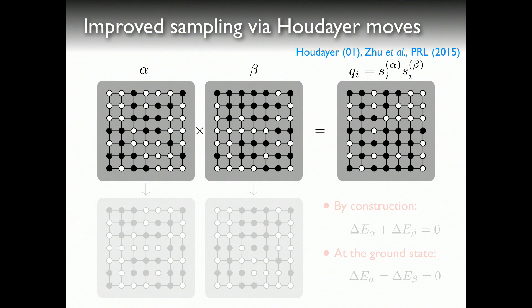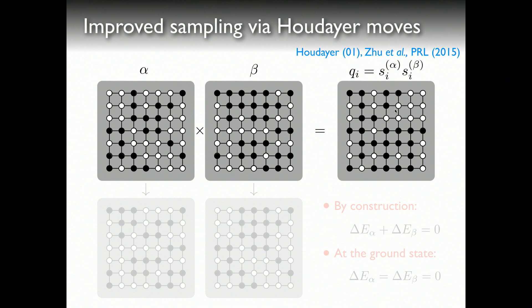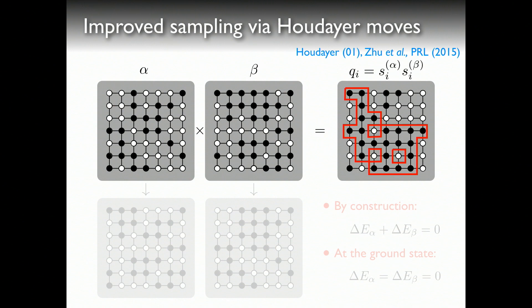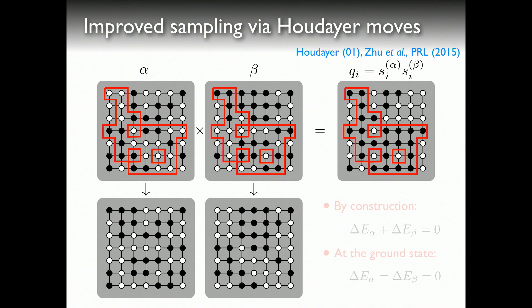Let me walk you through how this works. You start with two configurations alpha and beta — these can be two ground states or two simulation snapshots. In 2D, black means spin down, white means spin up. You multiply spin by spin to create what we call the overlap: when two spins are the same you get a white dot, when they differ you get a black dot. You then select one of the black spins, grow a connected component, apply it as a mask to the two initial configurations, and flip the spins in the mask to get two new configurations.